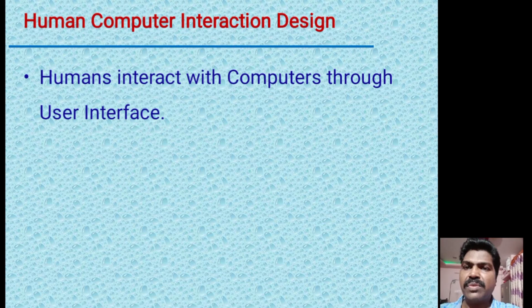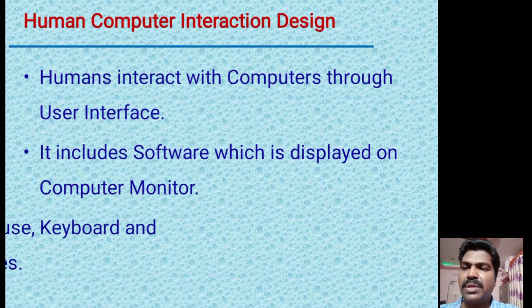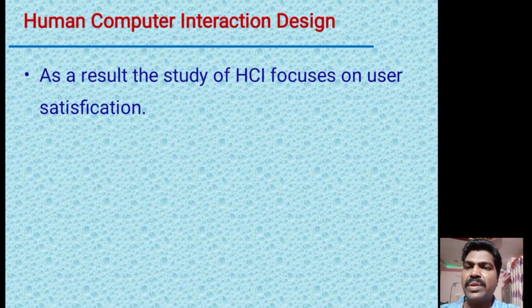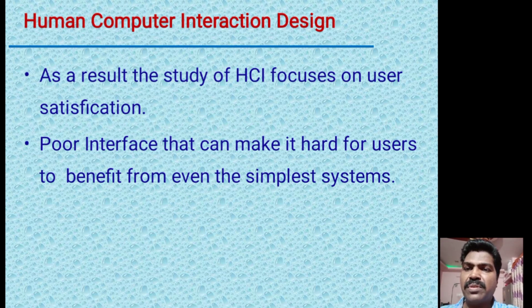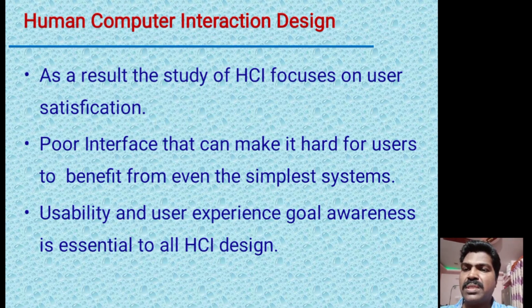Next is human-computer interaction design. Humans interact with computers through the user interface. It includes software displayed on the computer monitor and hardware such as mouse, keyboard, and other peripheral devices. The study of HCI focuses on user satisfaction — how effectively a user can interact with the computer. A poor interface makes it hard for users to benefit from even the simplest systems, so usability, user experience, and user experience goal awareness are essential to all HCI design.